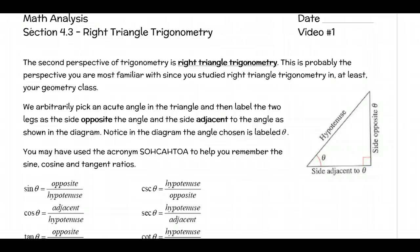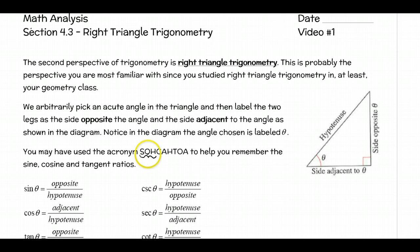With right triangle trig, a lot of it is looking at SOHCAHTOA, which you learned in geometry, where the sine is the opposite side over the hypotenuse — that's what the O and H stand for — and the cosine is adjacent over hypotenuse, and the tangent would be opposite over adjacent.